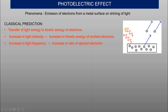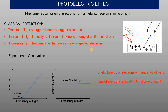The photoelectric effect is an energy transfer process: incoming light energy is transferred to electrons as kinetic energy, allowing them to escape the metal surface. The first prediction is that the kinetic energy of electrons depends on the frequency of the light. The second prediction involves a threshold frequency below which no electrons are emitted.